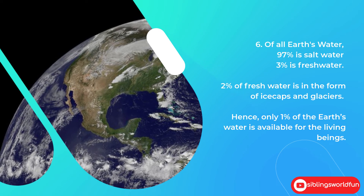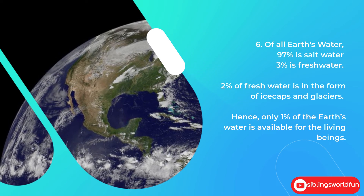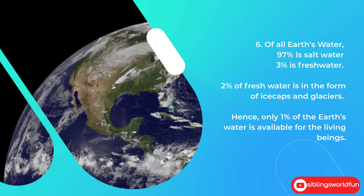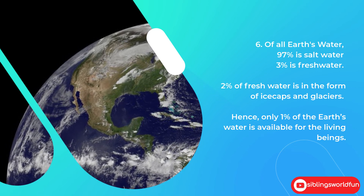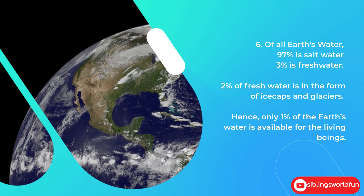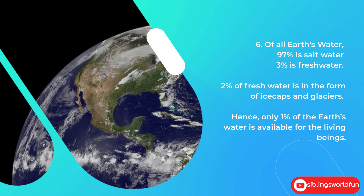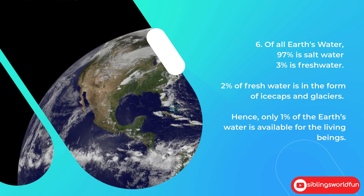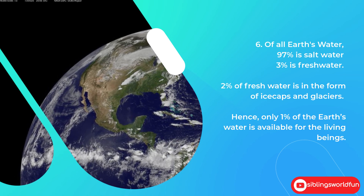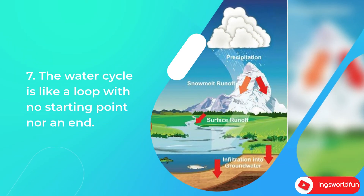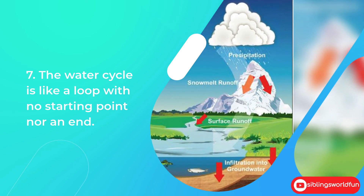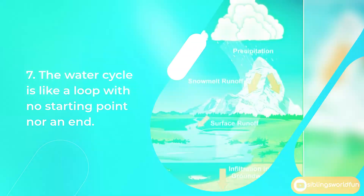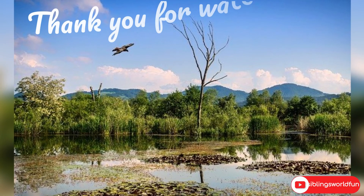Number six: of all earth's water, 97% is salt water and 3% is fresh water. Two percent of fresh water is in the form of ice caps and glaciers, hence only 1% of the earth's water is available for living beings. Number seven: the water cycle is like a loop with no starting point nor an end.